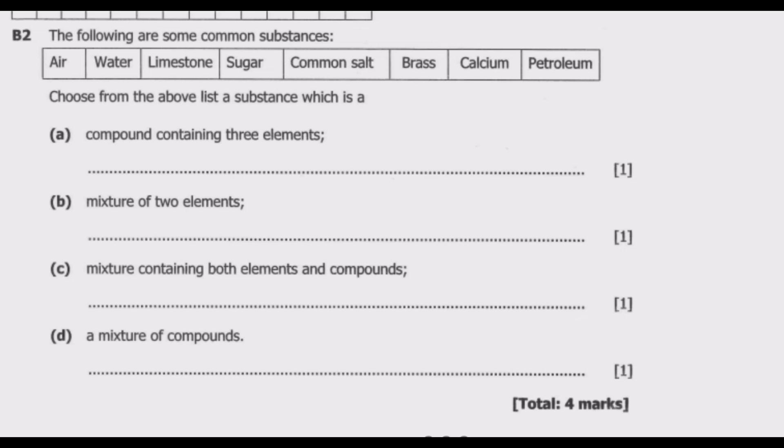So air is basically a mixture of partially some compounds and elements. We have water, which is basically a compound. We have limestone, which is calcium carbonate, a compound. Then we have sugar, which is an organic compound C6H12O6. Then we have common salt which is sodium chloride.